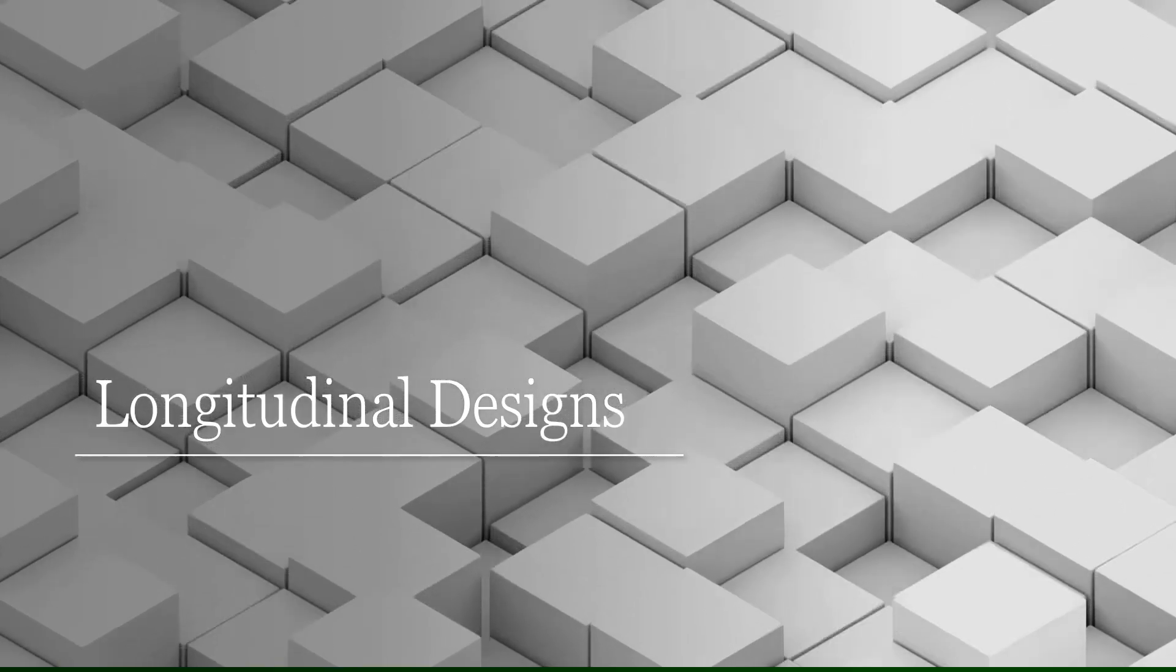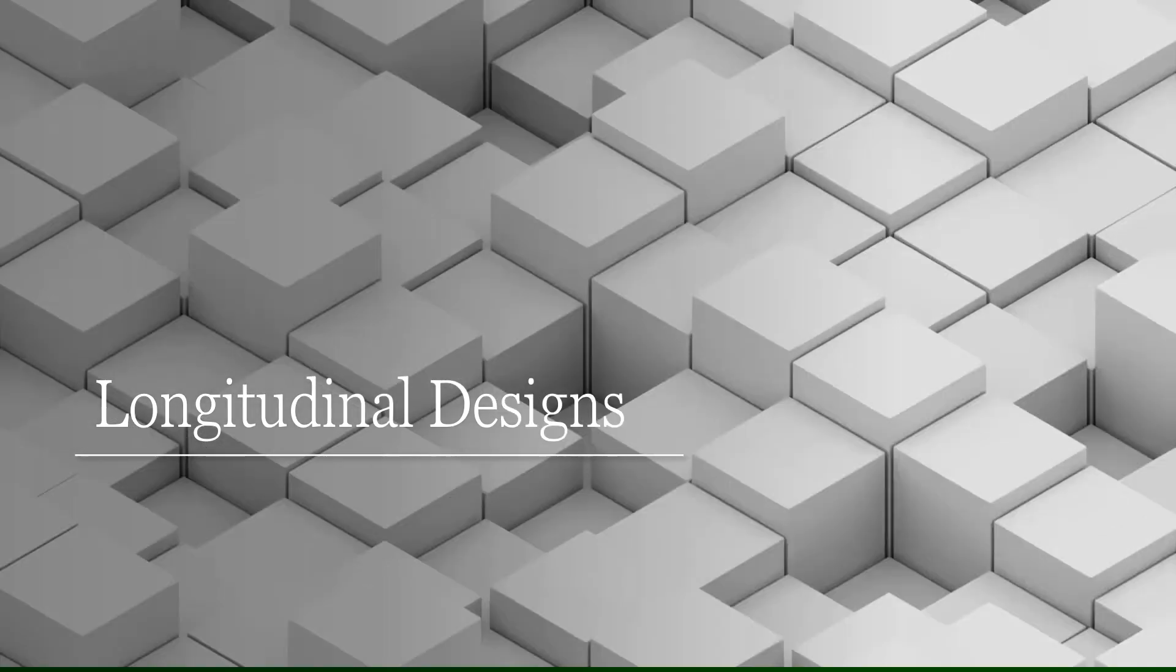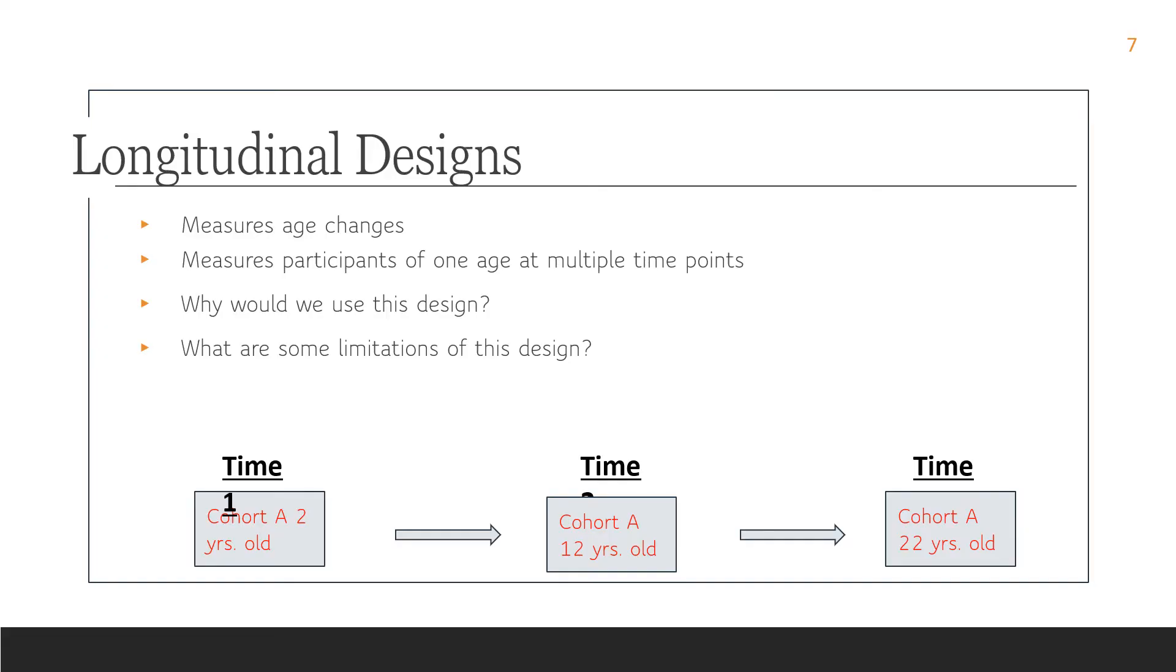Our next type of design is called a longitudinal design. A longitudinal design is the opposite of a cross-sectional design, and this is because we're studying only one group of people, and we're studying them over a period of time at multiple points in time. So instead of three age groups, we're studying one group at three different points in time. We're studying them when they're two, and then we're studying them again when they're 12, and then we're studying them again when they're 22. So if you think about it, I'm measuring age differences in a cross-sectional design, but I'm measuring age change in a longitudinal design.